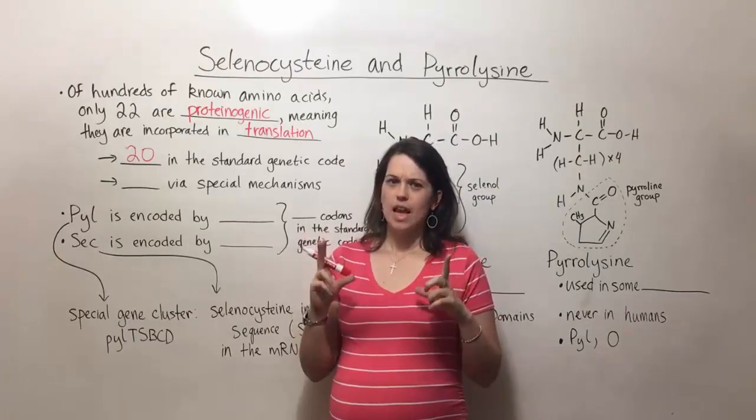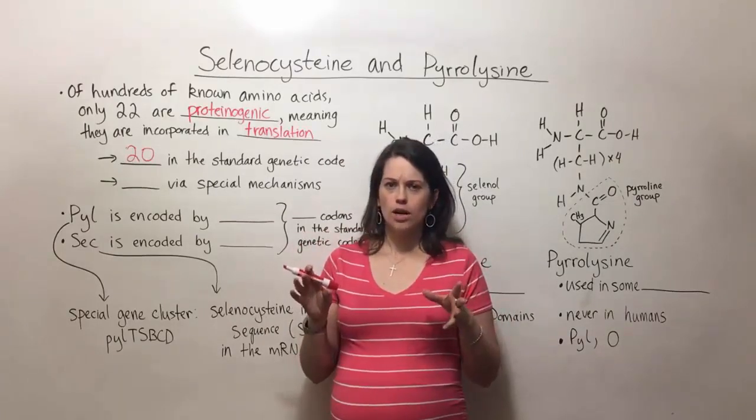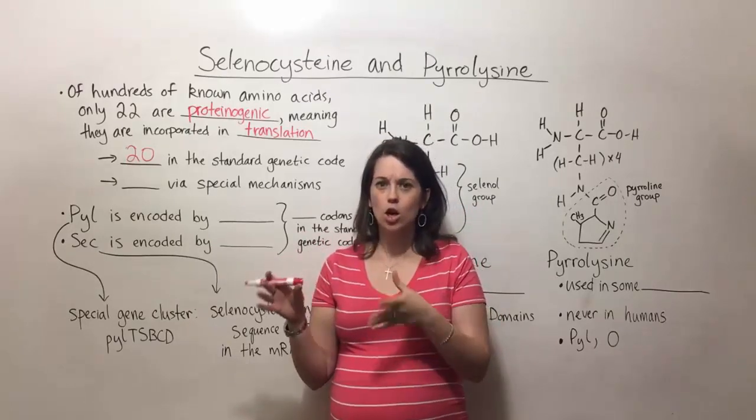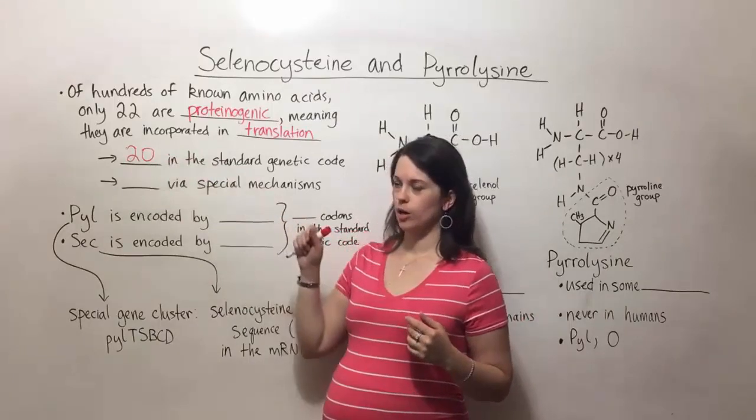You've probably seen that table where you've got all of the triplet codons that shows you what each triplet codon, which amino acid it codes for. So those are the 20 that we're talking about here.